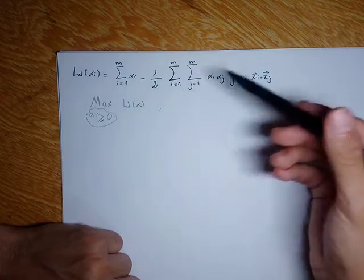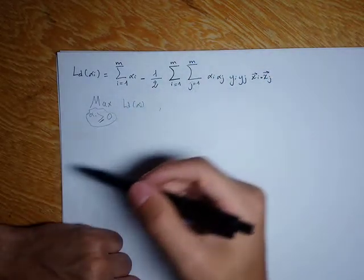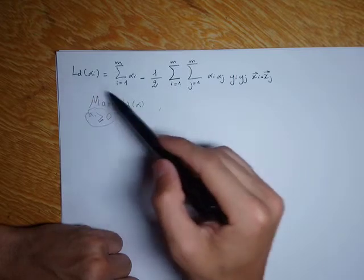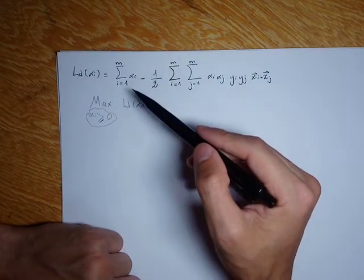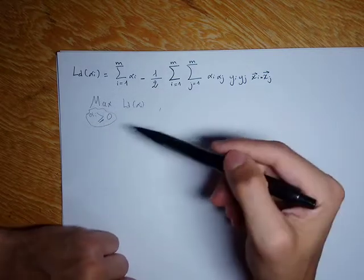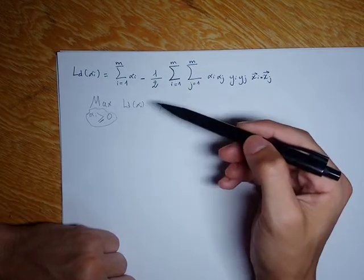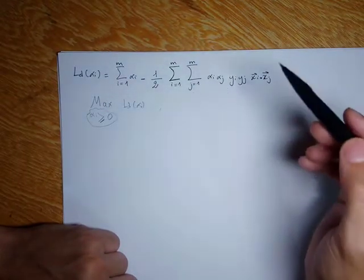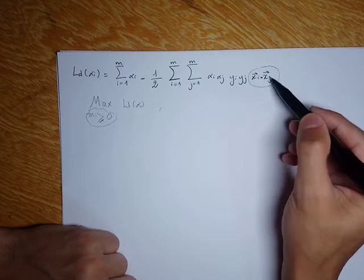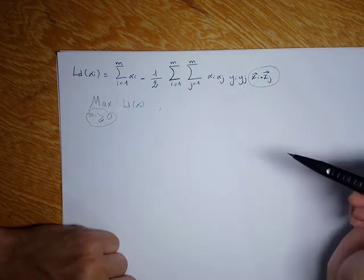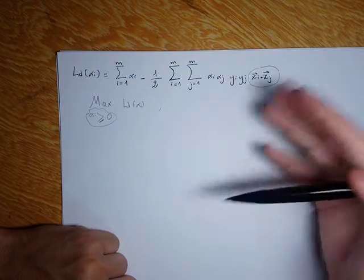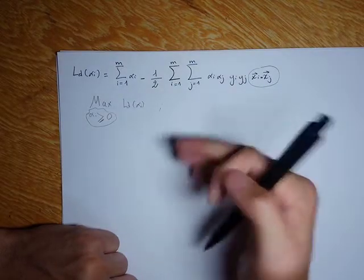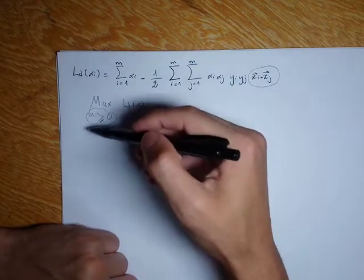Of course we are not going to do that manually, because there are many packages and libraries to do that. The reason why we derived this expression, even if we are not going to work out this maximization problem ourselves, is that we wanted to see upon what this maximization problem depends. We discovered that it depends upon the number of pairs x_i, x_j. So when the number of pairs of training samples increases, the number of iterations we would need to do also increases — this tells us upon what the complexity of this maximization problem depends.